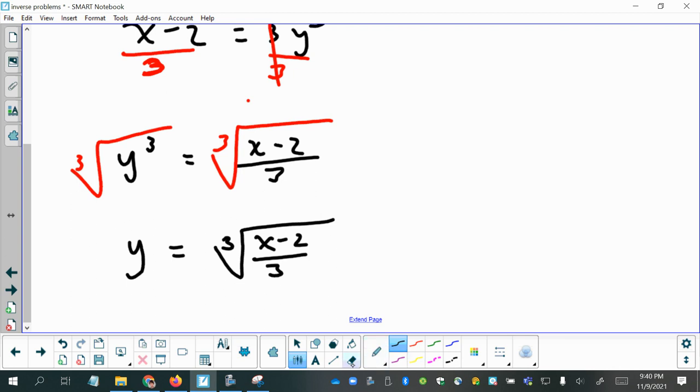And then we just want to have one last step. And that is to rename the y with the function notation for the inverse function. All right. So we have f inverse of x equals the cube root of x minus 2 over 3. Let's look at what that looks like graphed.